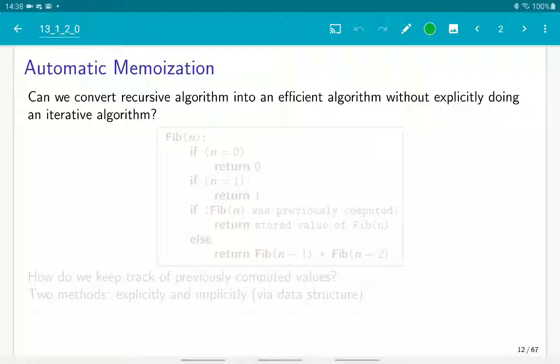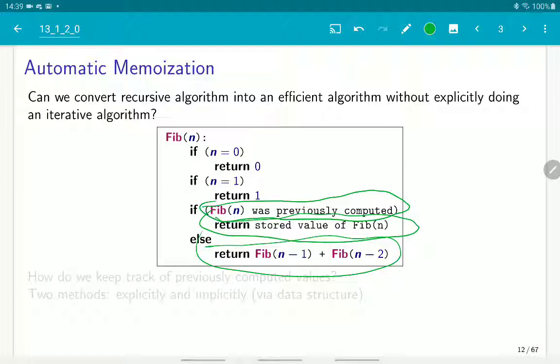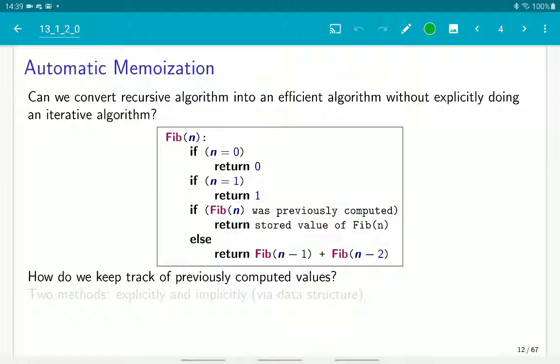A very nice mechanism that some functional languages have is this automatic memoization. The idea is that any recursive function can be converted into a memoized version where whenever you call recursively, you check if the value was already computed and stored somewhere. And if you computed it previously, you just fetch the value and return it. Otherwise, you continue as in the previous version. So this is called automatic memoization. And of course, we need to somehow implement this mechanism of memory, of remembering previous computations.